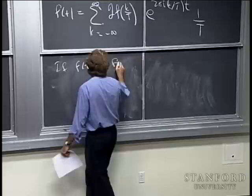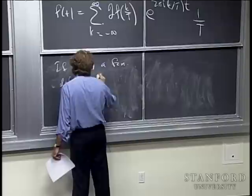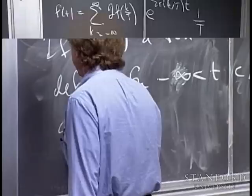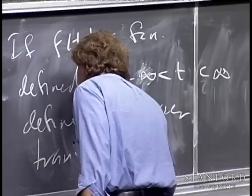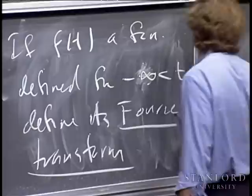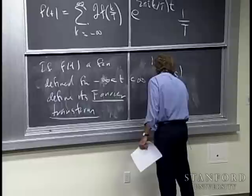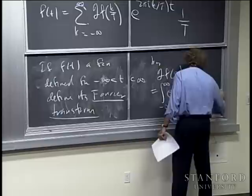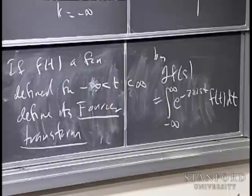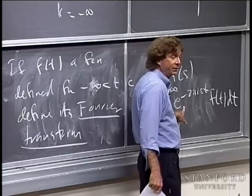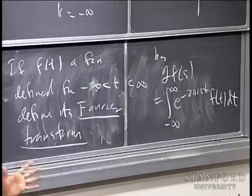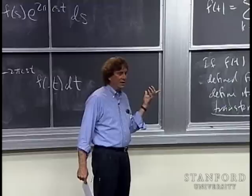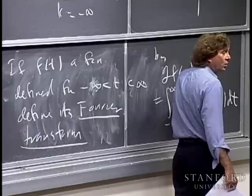So we define: if f(t) is a function defined on the whole real line, minus infinity < t < infinity, its Fourier transform at s is given by the integral from minus infinity to infinity of e to the minus 2πi·s·t f(t) dt. Here s is also a real variable. The Fourier transform is complex-valued because we're integrating against a complex exponential. f can be real or complex — in applications, f is often a real signal.